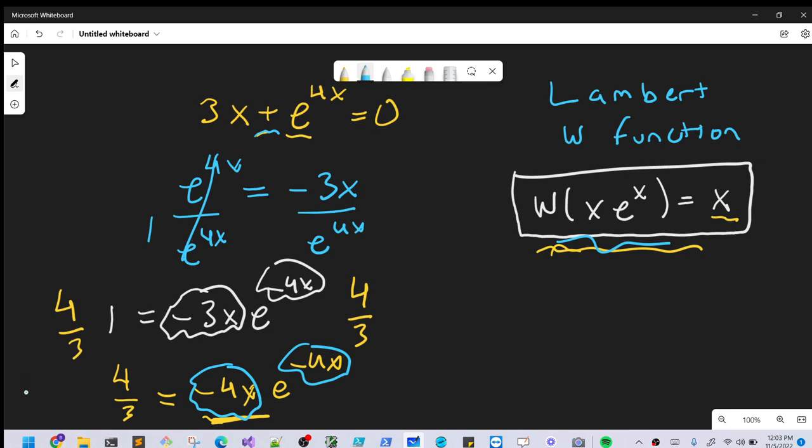We're going to have Lambert W of 4 thirds equals Lambert W of minus 4x e to the minus 4x. I need to write more carefully because it's getting ugly.